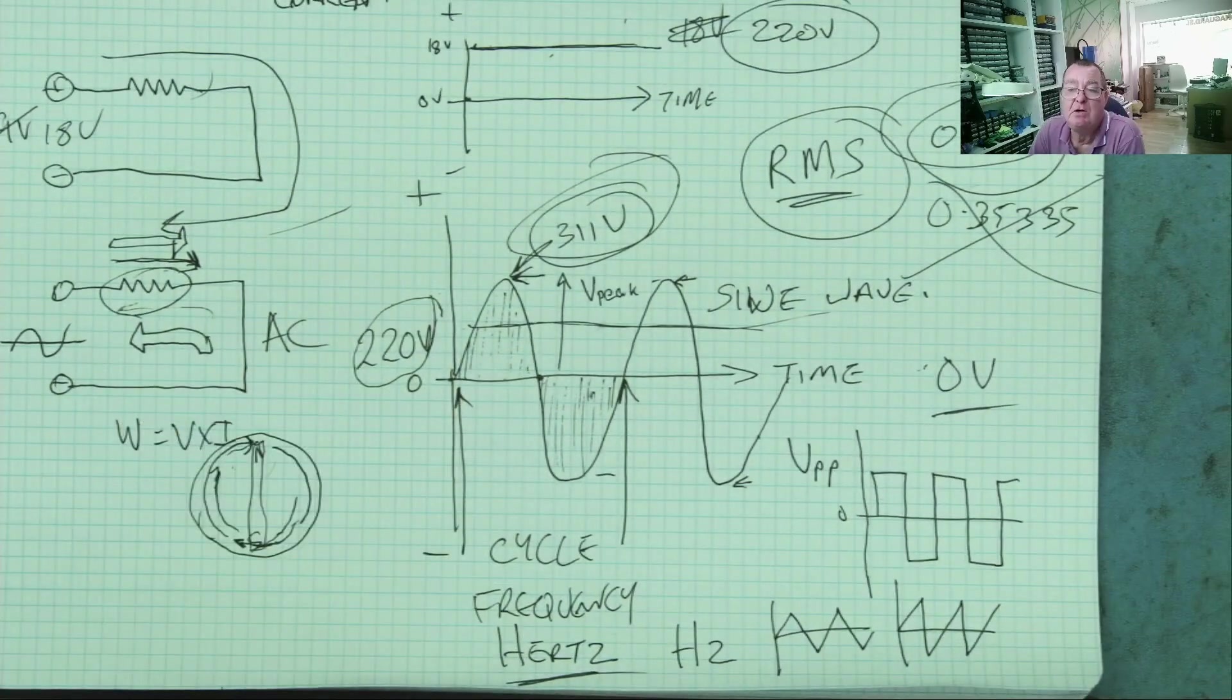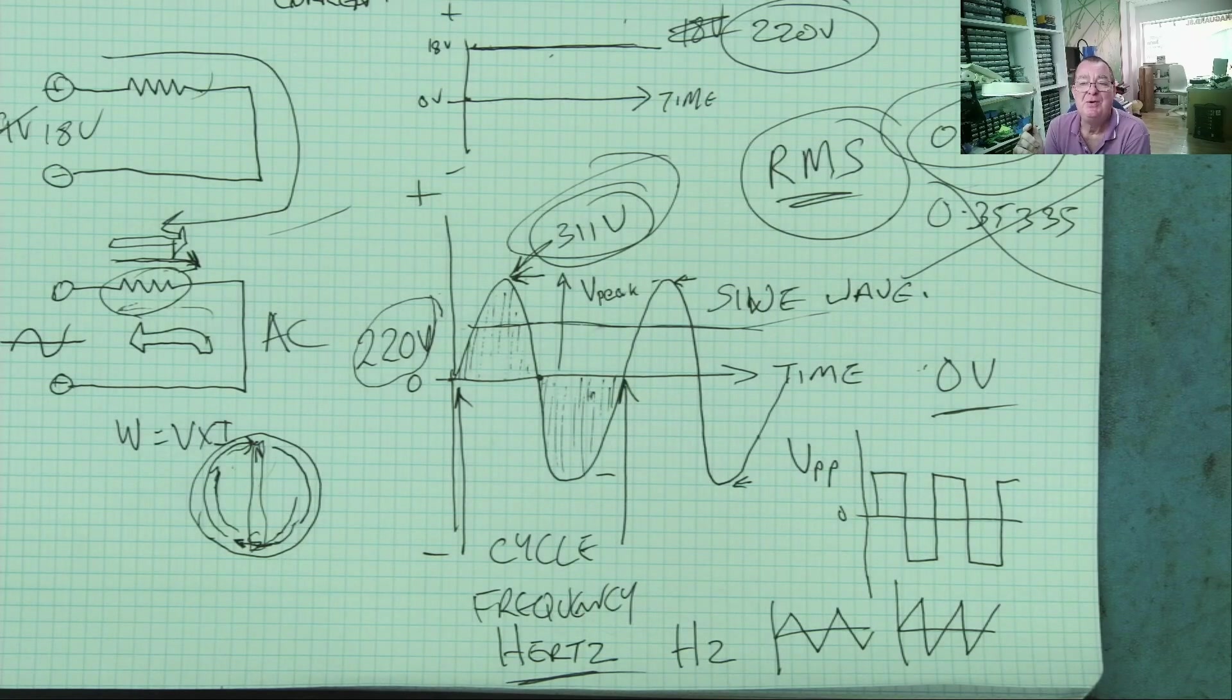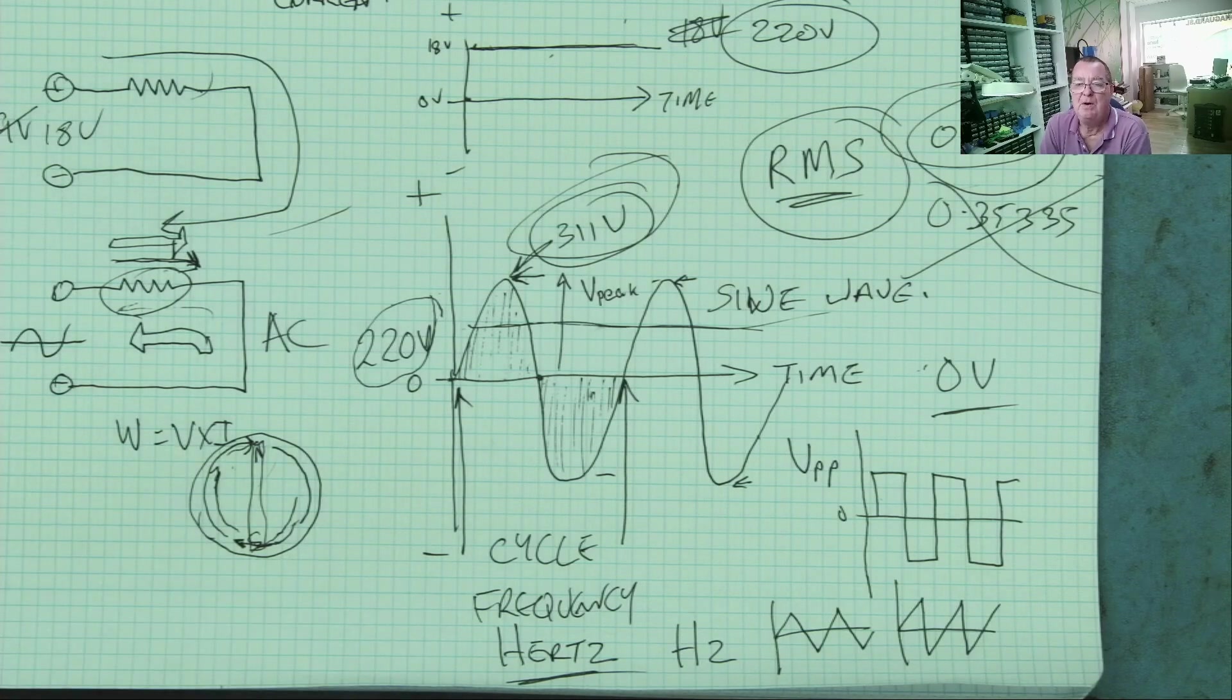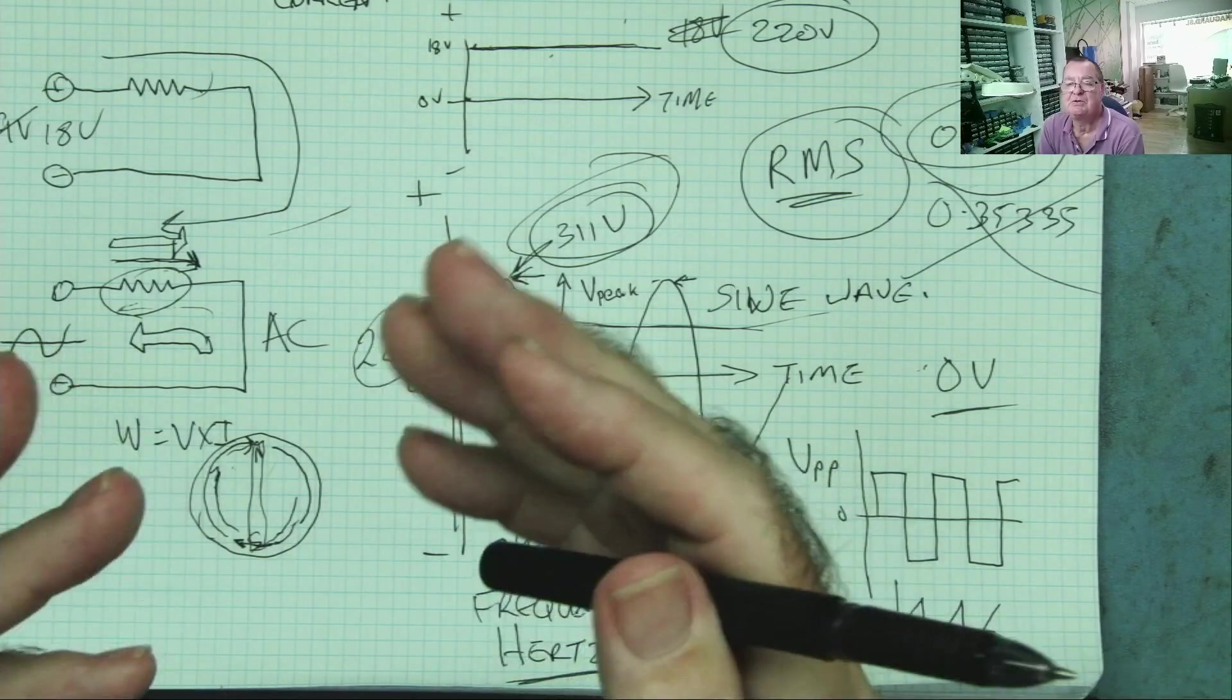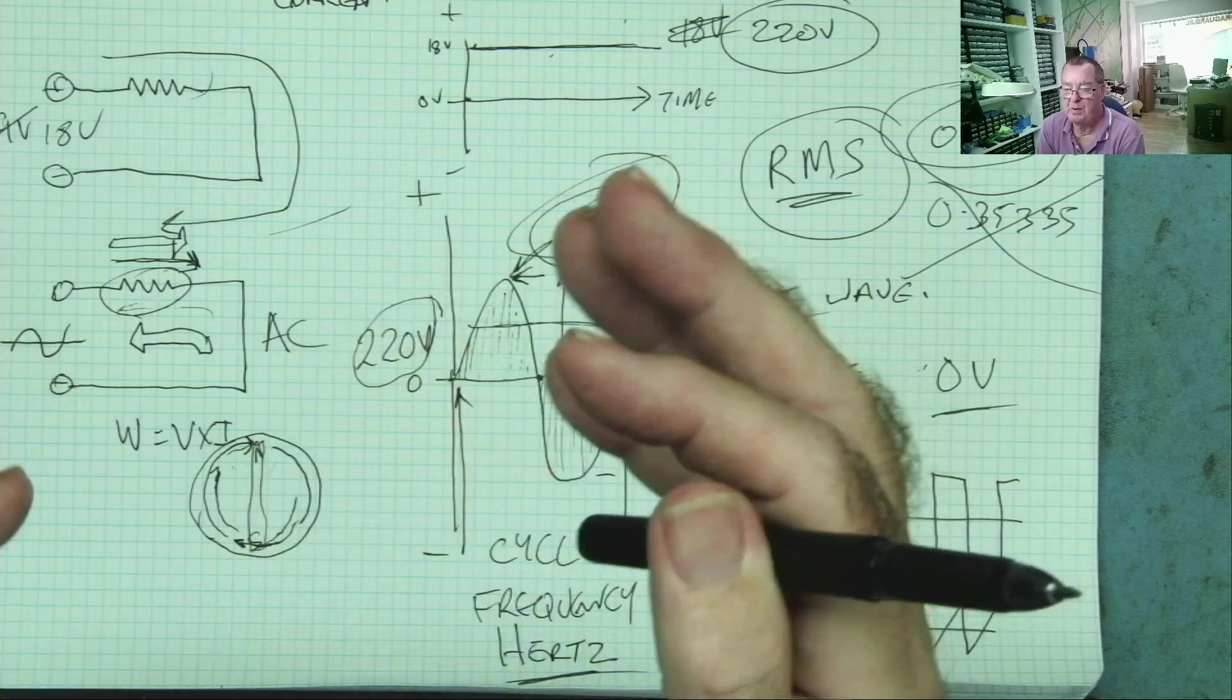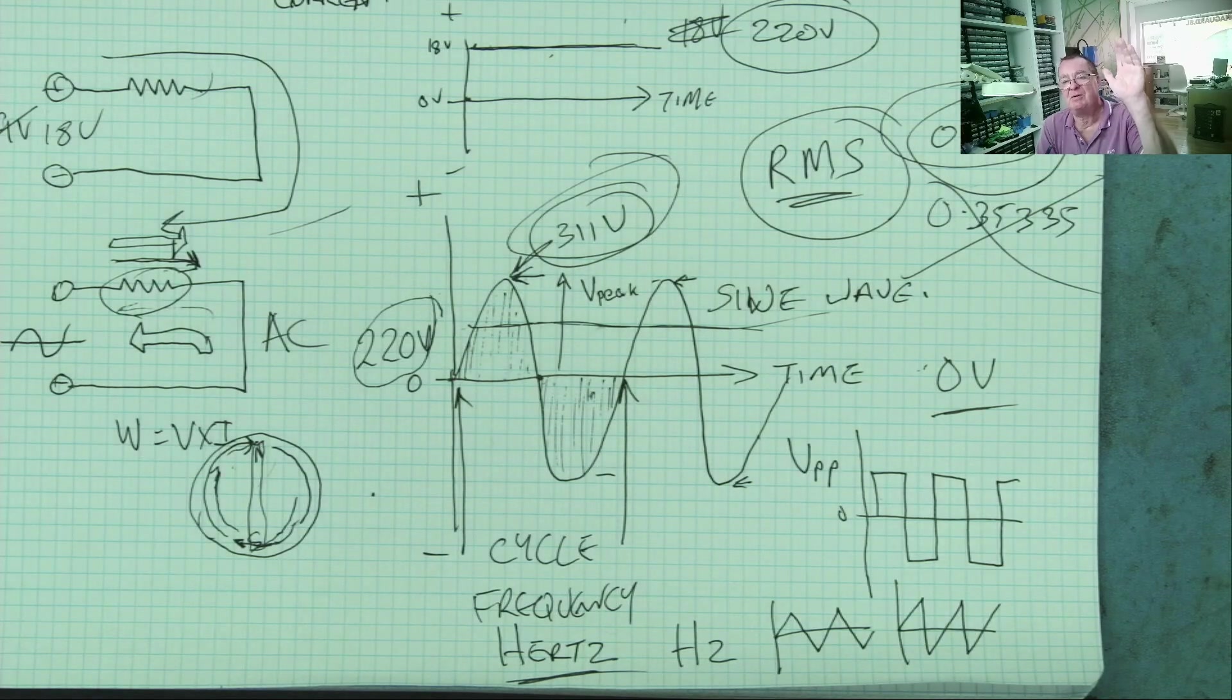Very quick lesson. Did I forget anything? Sure, I must have done. So, comments below. And I think after this lesson, now, we probably have enough terminology. And we understand electricity enough to really start talking about some electronic components and what they do and how we make circuits from them. So, until next time. Ciao for now, guys.